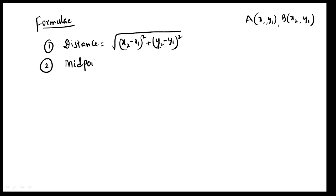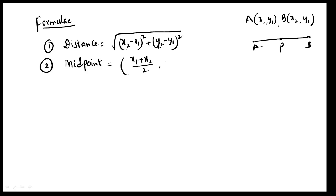The distance formula leads to midpoint. Line segment AB midpoint formula: x1 plus x2 divided by 2, and y1 plus y2 divided by 2. That is the midpoint formula.